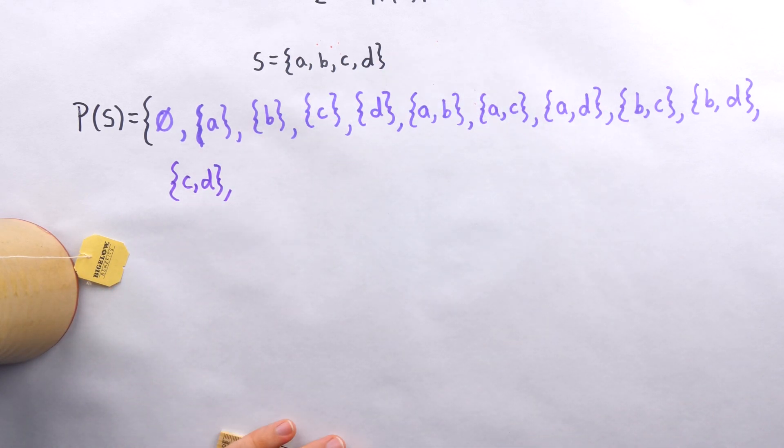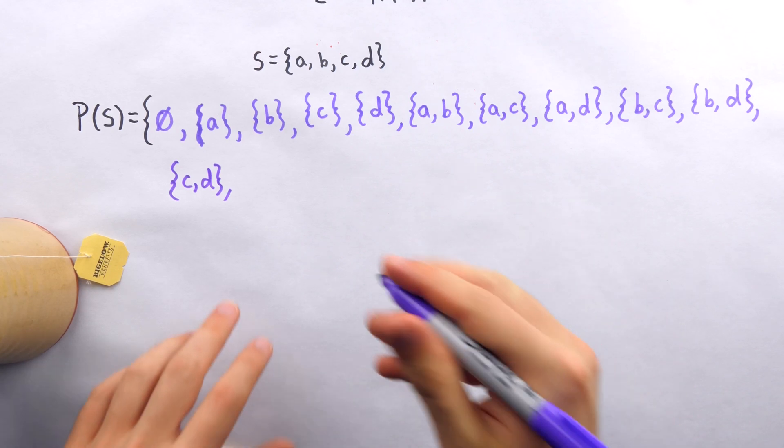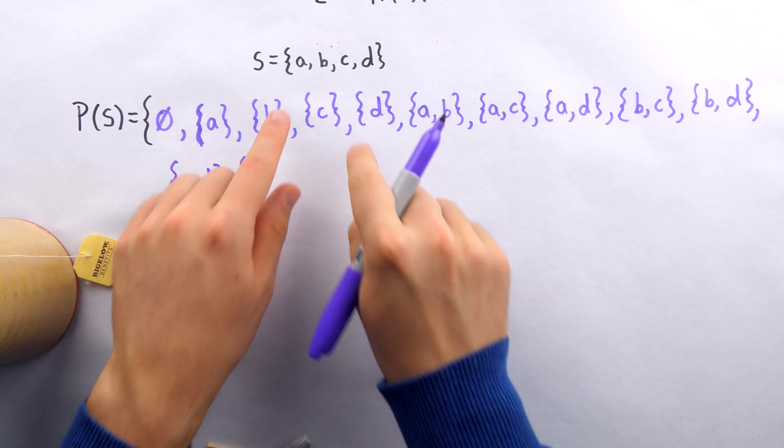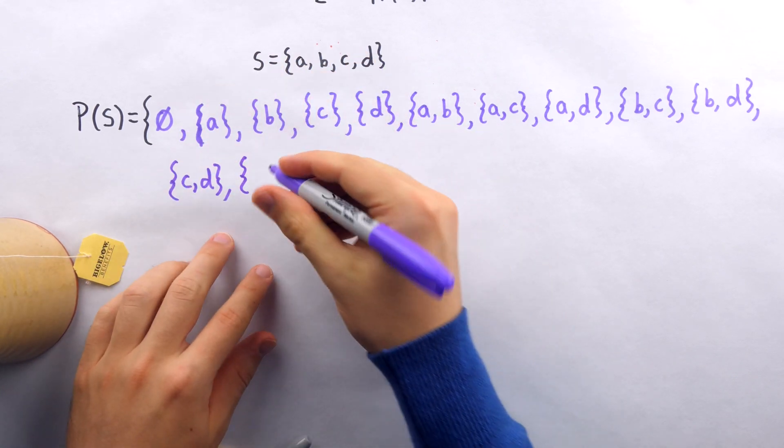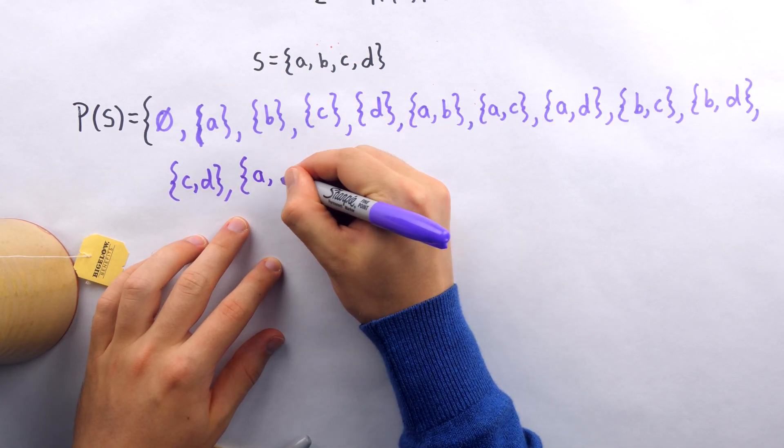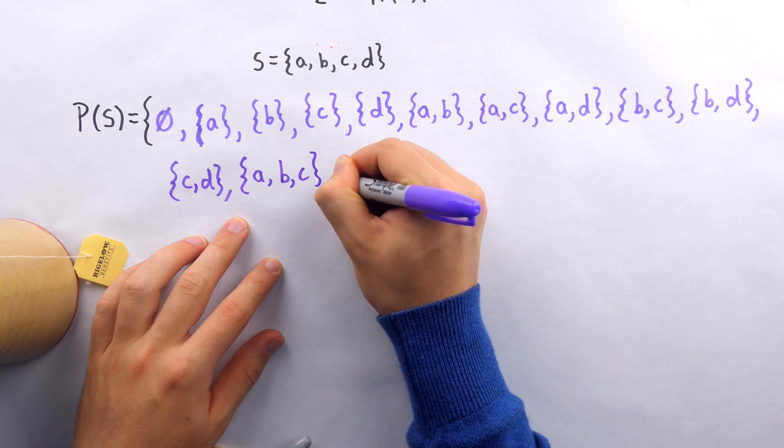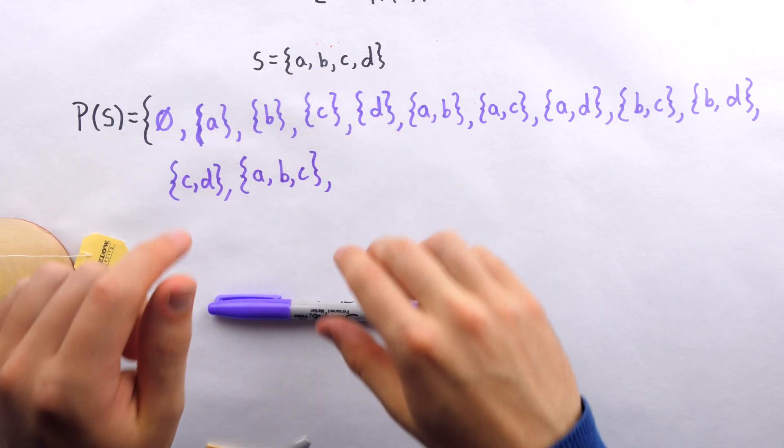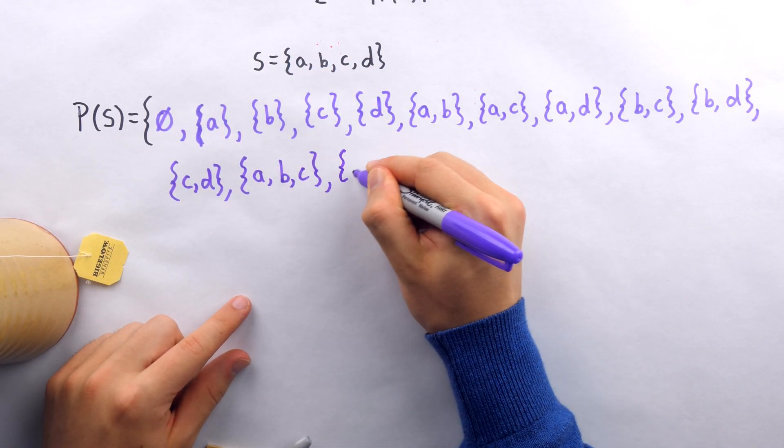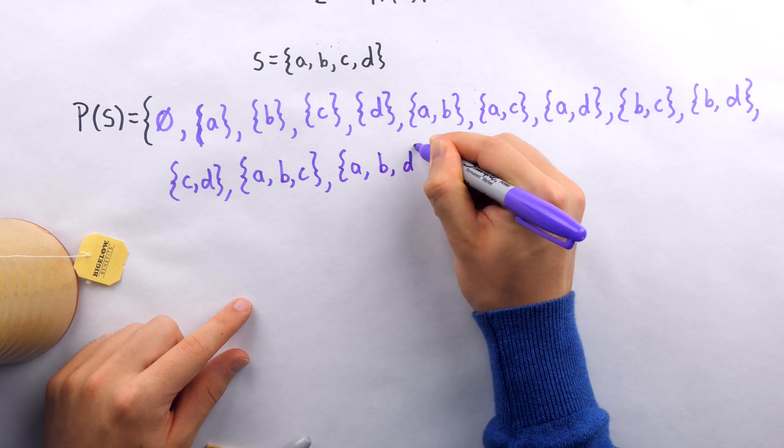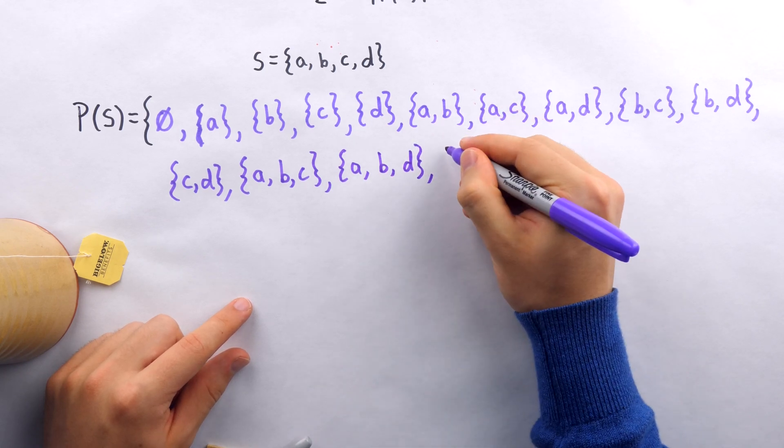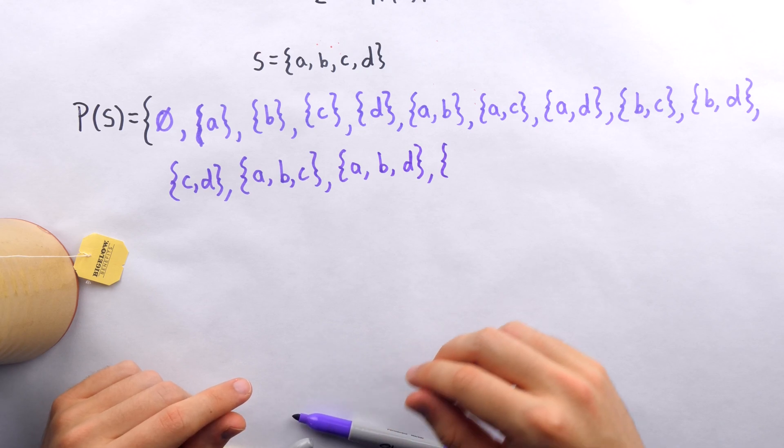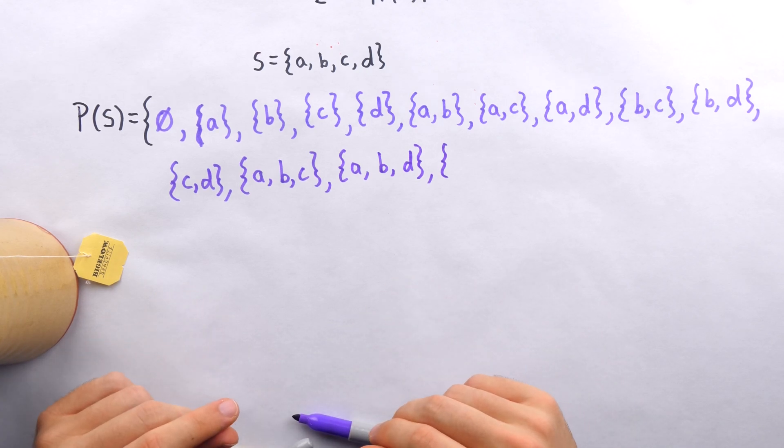All right, now that I'm done all the two element subsets, I need all of the three element subsets. Remember, at the end we should have 16 subsets. So starting my first three element subset, that's going to be A, B, C. So the subset that contains A, B, and C. And then I'm moving my right finger over one. And I got A, B, D. So the next subset contains A, B, and D. You can of course adapt this strategy for subsets of any size that you like, as long as you understand the method here.